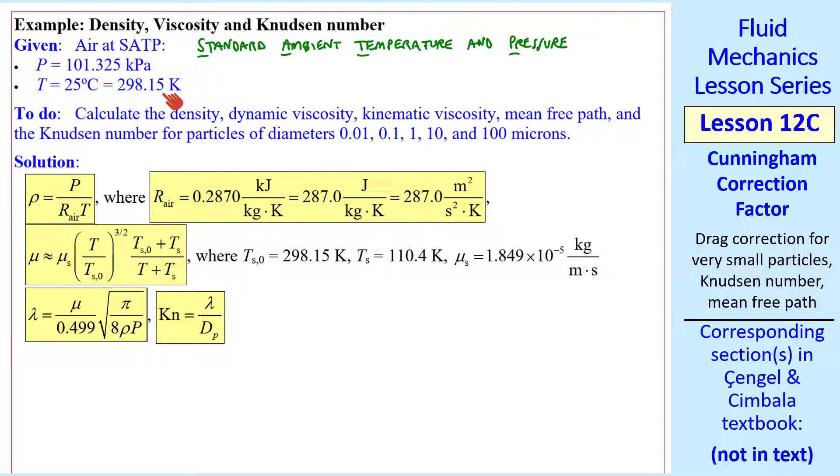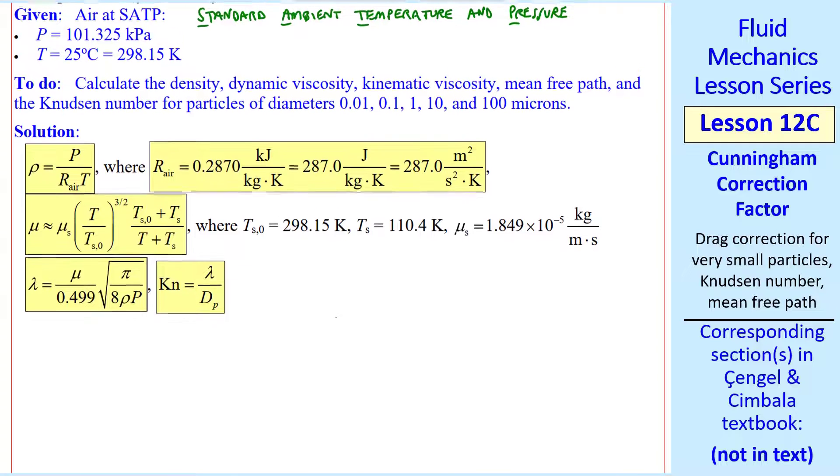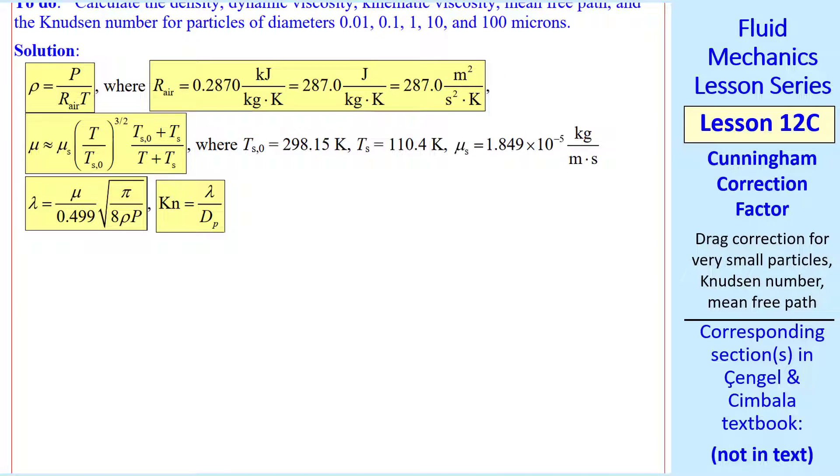In all these equations, we must use K, not C. Always use absolute temperature. In this problem, we want to calculate the density, dynamic viscosity, kinematic viscosity, mean free path, and Knudsen number for particles of various diameters. I duplicated the equations here, and we plug in the numbers to do our calculations.